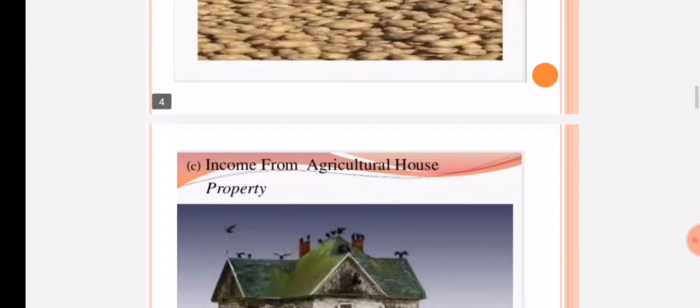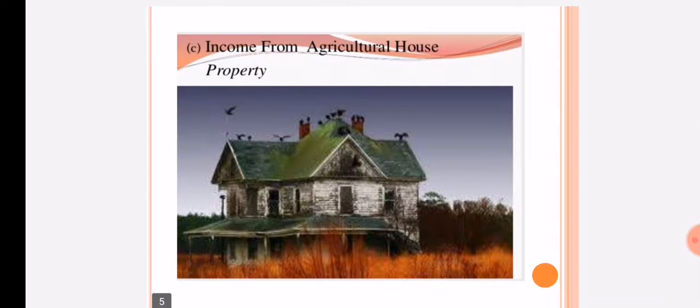Income from Agricultural House Property is also treated as agricultural income. The house property used for storing agricultural produce — the income received from that house property is treated as agricultural income.